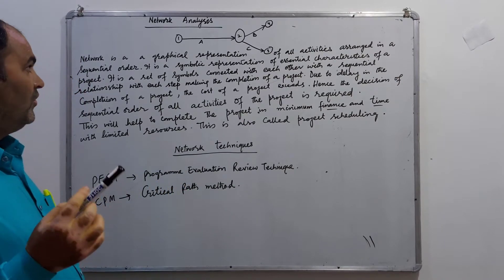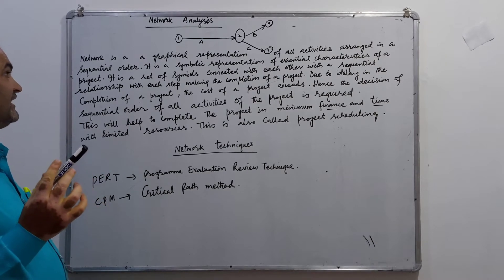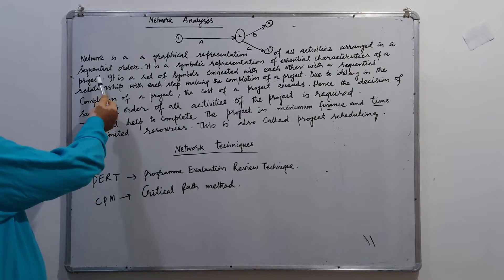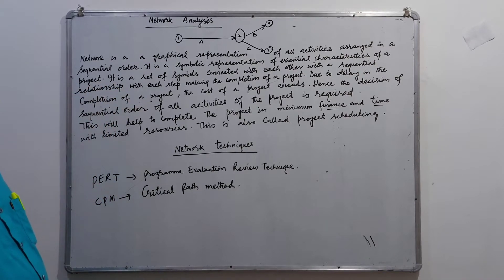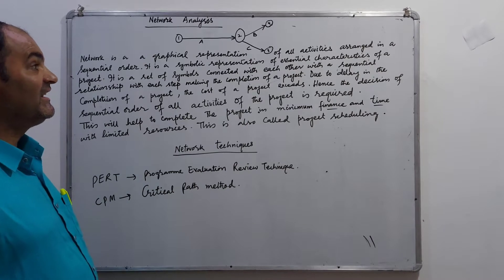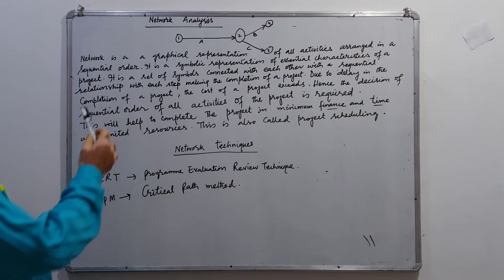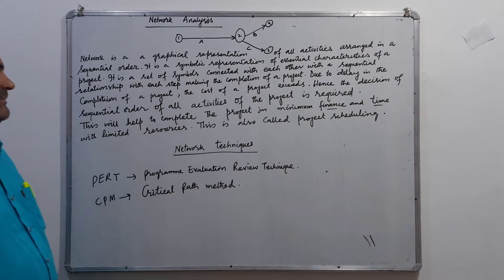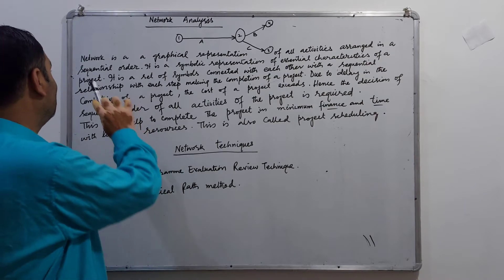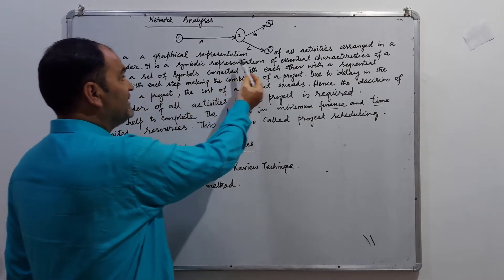According to Operations Research, a network is a graphical representation of all activities arranged in a sequential order. It is also a symbolic representation of the essential characteristics of a project. Let me repeat: a network is a graphical representation of all activities arranged in a sequential order.